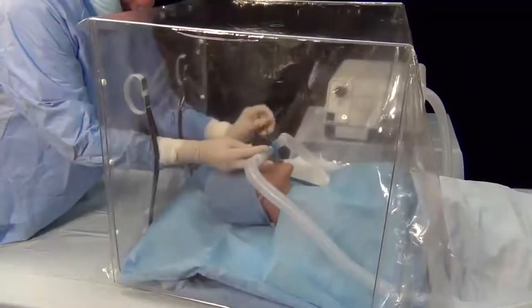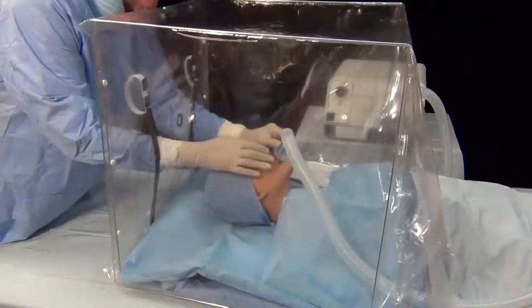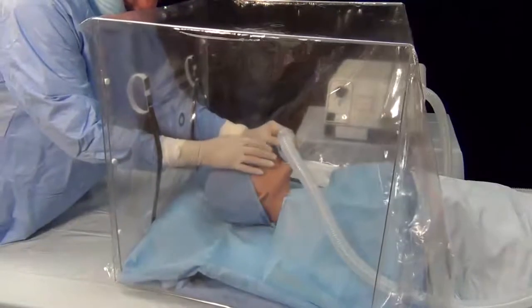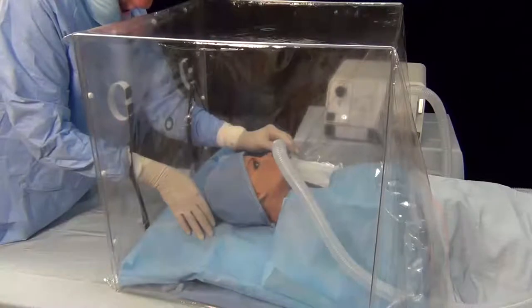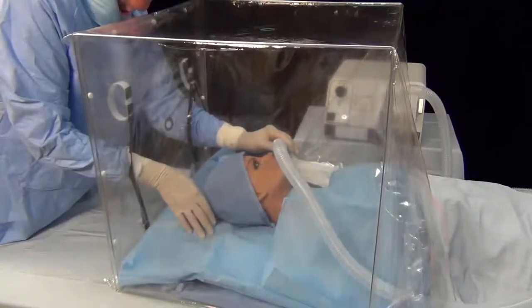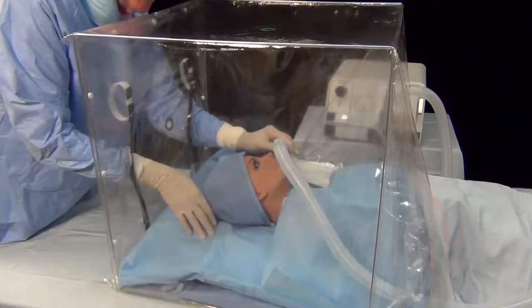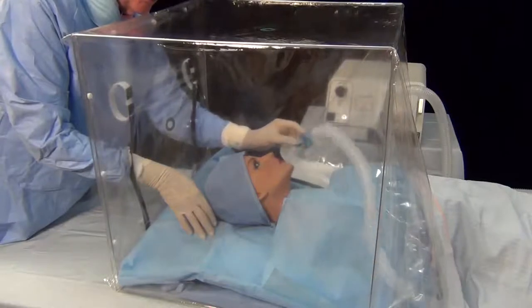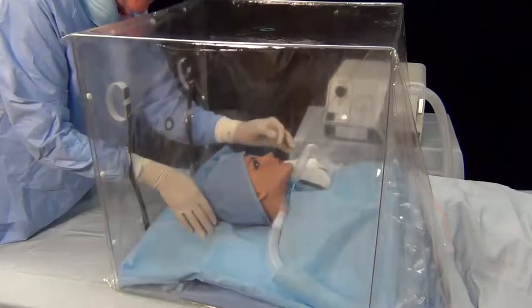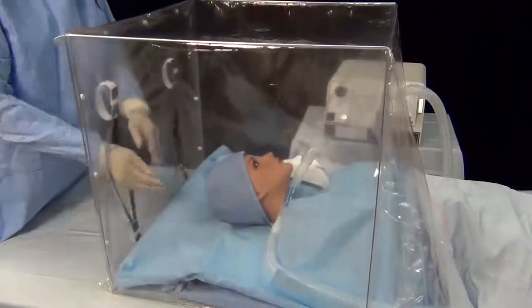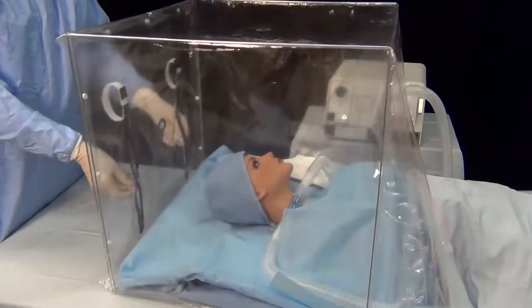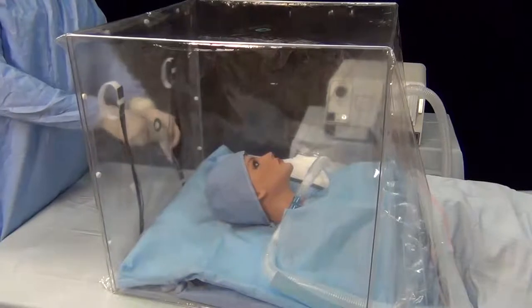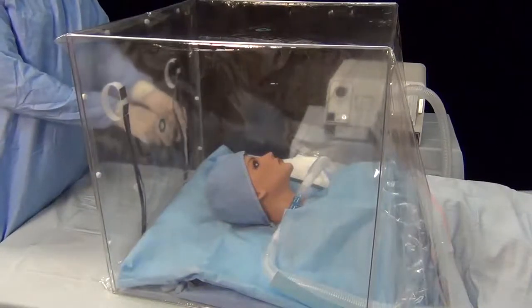And then once the endotracheal tube is in place and taped, then you can take your respiratory tubing, attach it to the endotracheal tube to complete the process. During extubation, it would be just reversed. The respiratory tubing would be removed, the tube would be taken out, removed outside, and then the tabs replaced to close and reseal the access ports to maintain isolation of the patient.